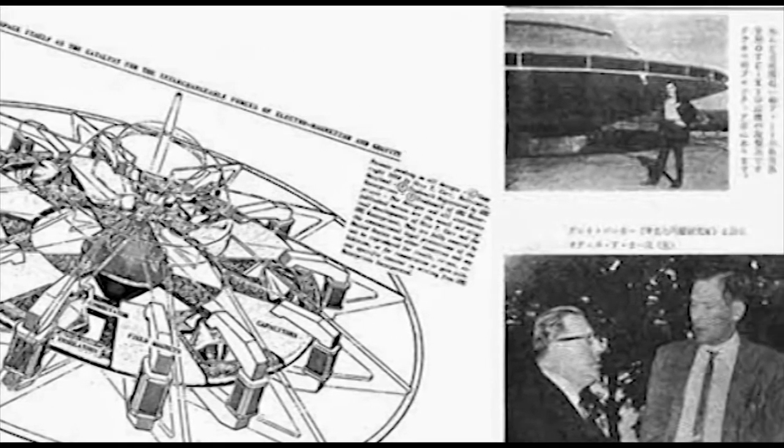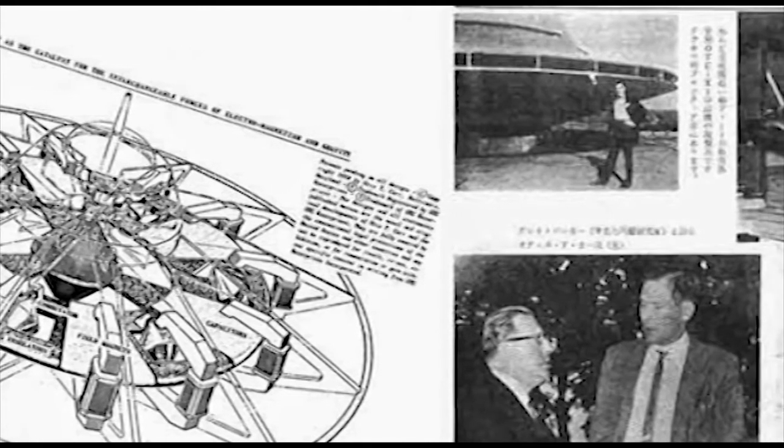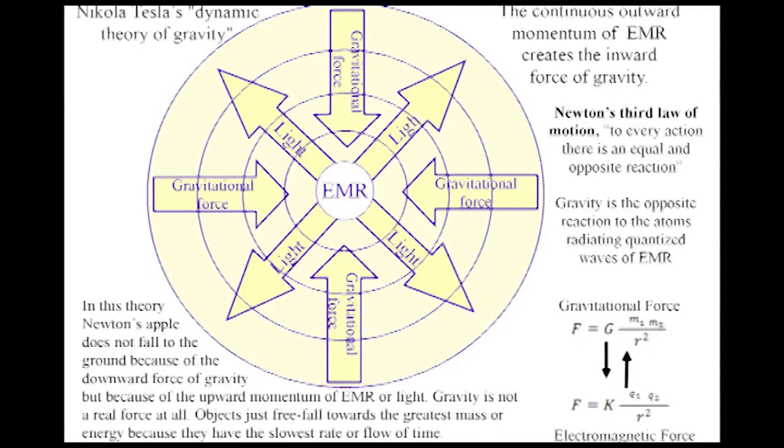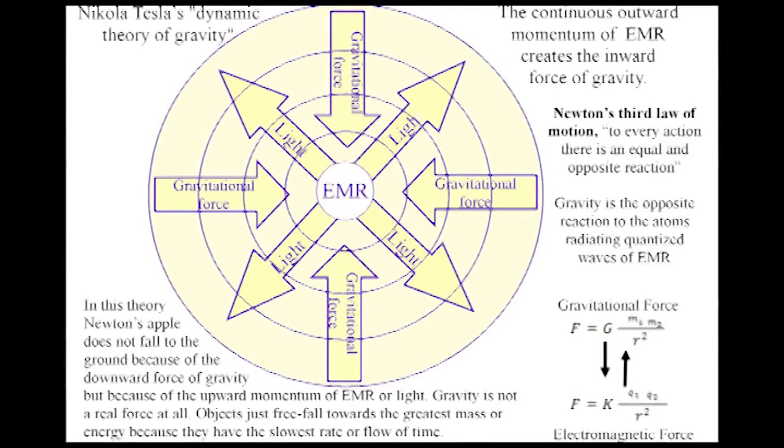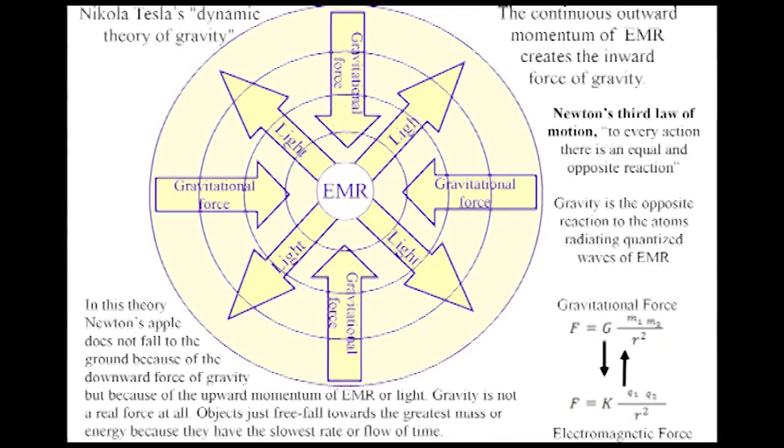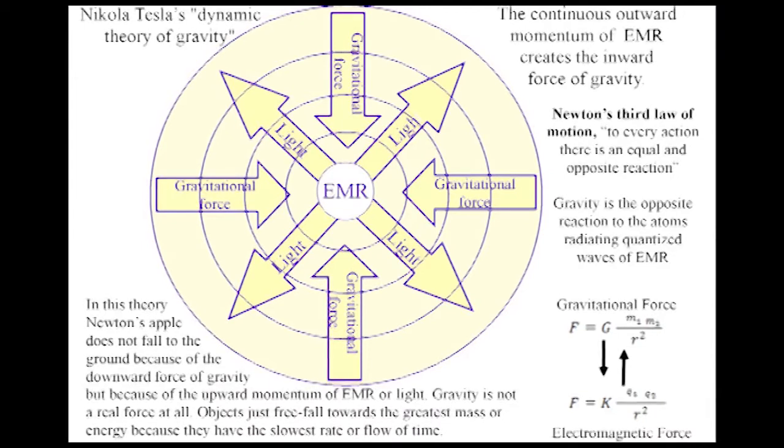In 1897, when Tesla presented his dynamic theory of gravity, he said that all bodies emit microwaves whose voltage and frequency are determined by their electrical contents and relative motion.